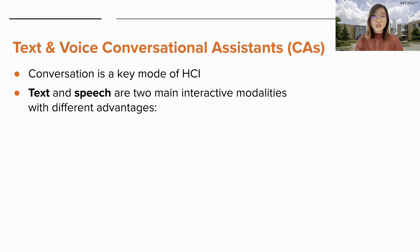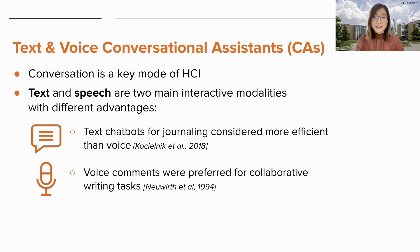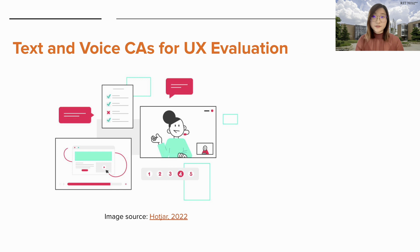Conversation is a key mode of HCI due to the proliferation of conversational agents in both professional and personal use. Since text and speech are the two main ways to interact with them, prior work has compared the two modalities and demonstrated differences in user behavior. For example, text agents designed for journaling were considered more familiar and efficient than voice ones, but voice comments were preferred for collaborative writing tasks over text. Since prior work showed that the context of use impacts preferences for text or voice, we wanted to understand the differences between those modalities specifically for the context of UX evaluation.